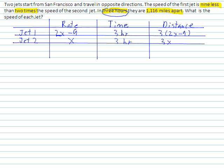Now once you've got the table complete, you can come down here and add those two distances together of both jet 1 and jet 2. And that should equal 1,116. And you know that from up here, because the problem gave us that.